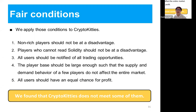We define conditions for fairness. First, knowledgeable players should not be at a disadvantage. Second, players who cannot read Solidity should not be at a disadvantage. Third, all users should be notified of all trading opportunities. Fourth, the player base should be large enough such that the supply and demand behavior of a few players does not affect the entire market. Finally, all users should have an equal chance for profit. As a result, we found that CryptoKitties does not meet some of these requirements.